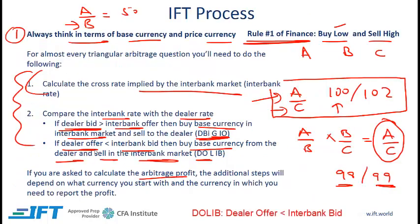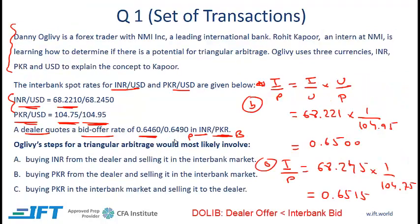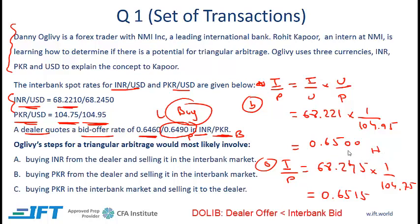What about the other condition? The other condition is dealer offer less than interbank bid. Since the dealer offer is the low number and the interbank bid is the high number, the arbitrage transaction will involve buying from the dealer. Remember rule number one: buy low, sell high. So we are going to buy the base currency PKR from the dealer and sell PKR in the interbank market. The best answer is B: buying PKR, the base currency, from the dealer and selling in the interbank market.